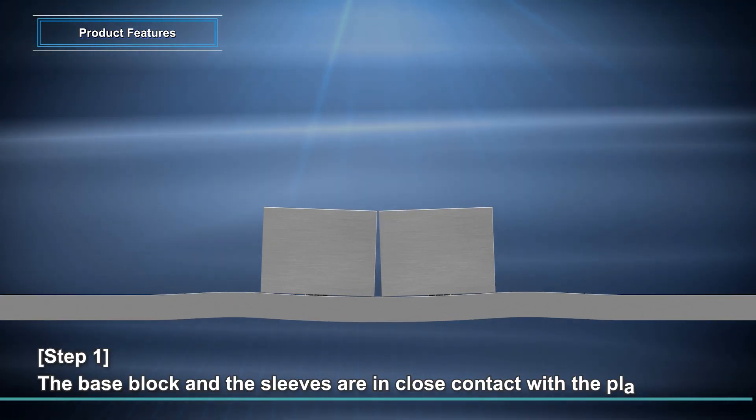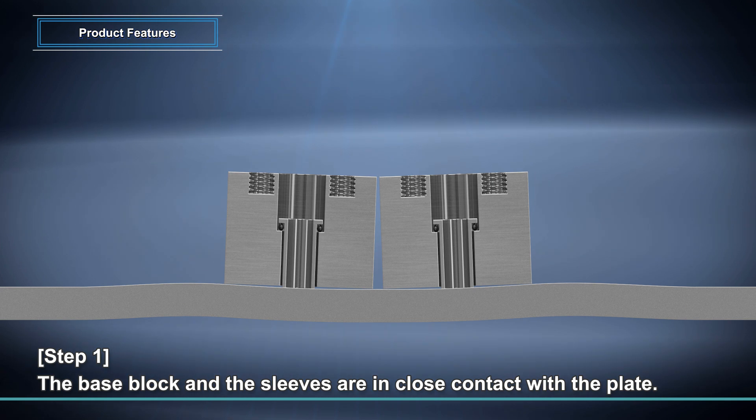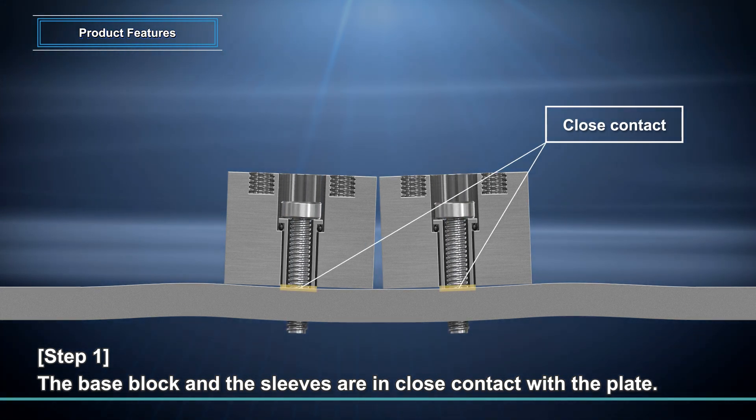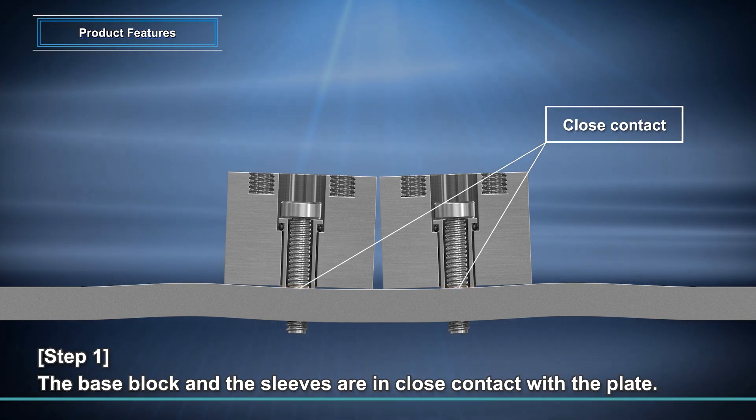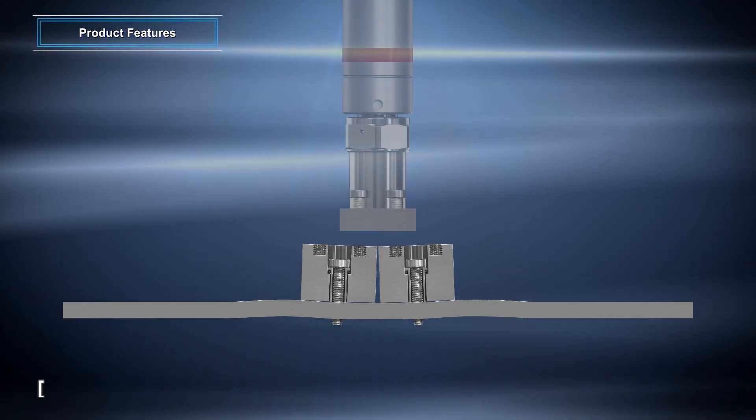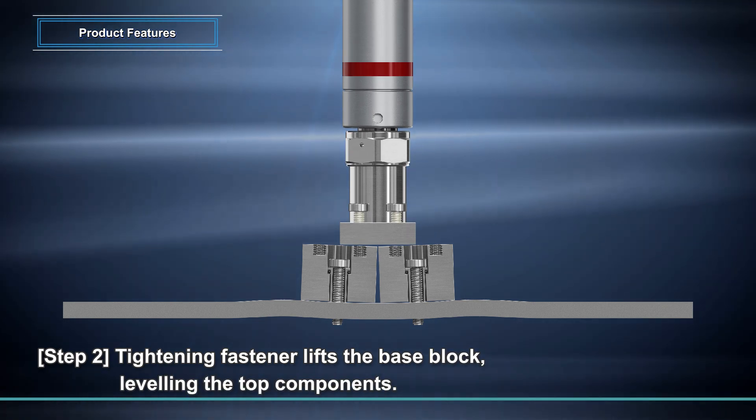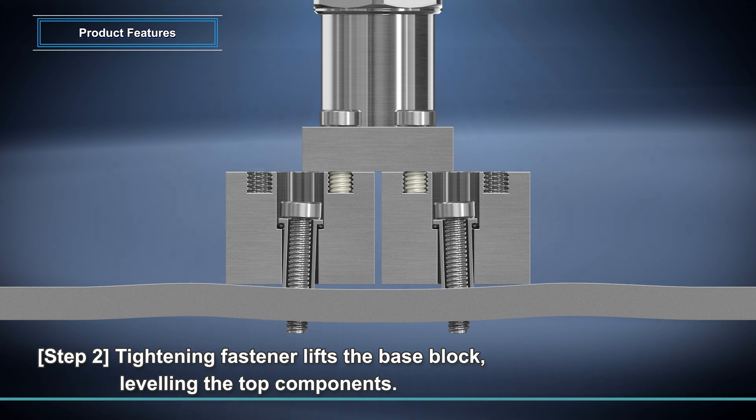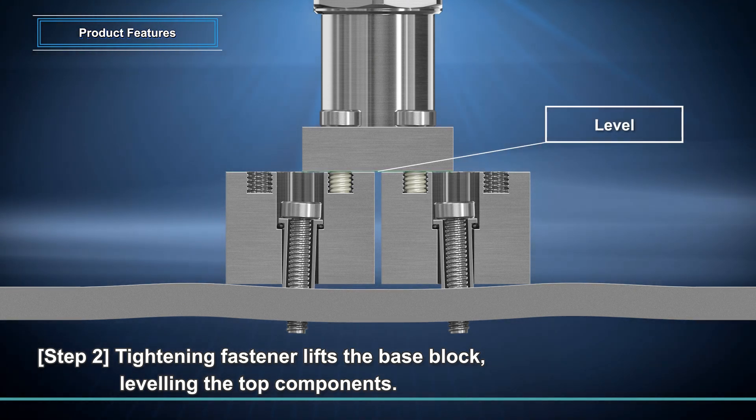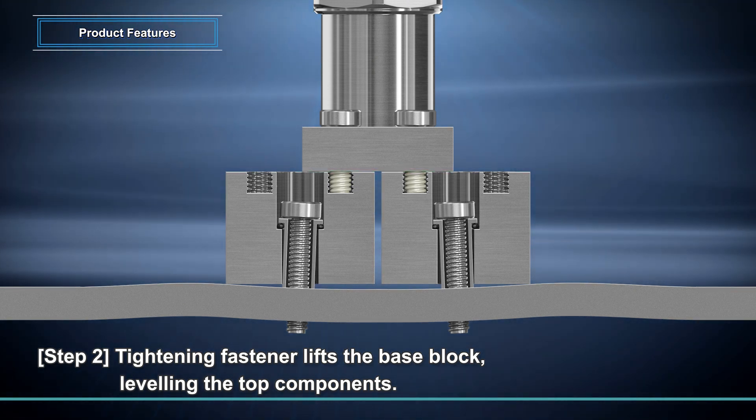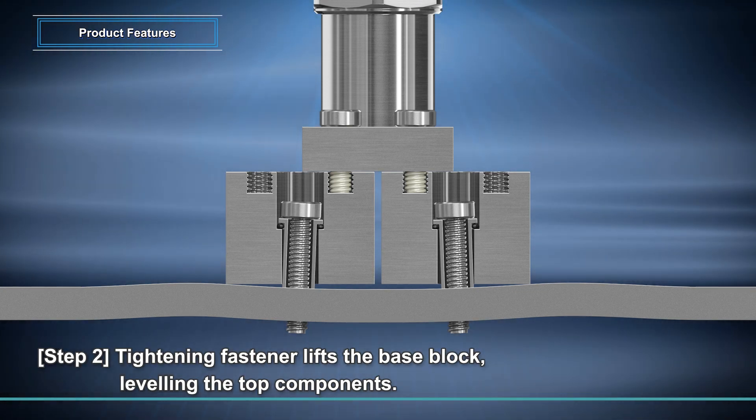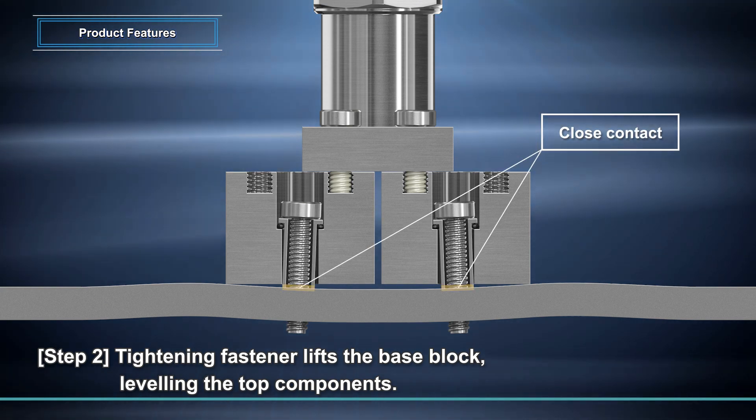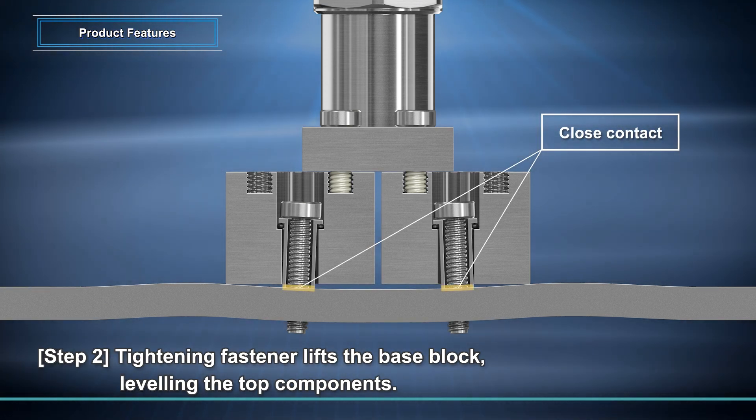Step 1: Tightening fasteners of the base block allows the base block and the sleeve edge to closely contact the plate. Step 2: Tightening fasteners of the top component will lift the base block, leveling the top component in a horizontal position. The base block is lifted, however, seal performance is not affected because the sleeves are in close contact with the mounting plate, irrespective of its flatness.